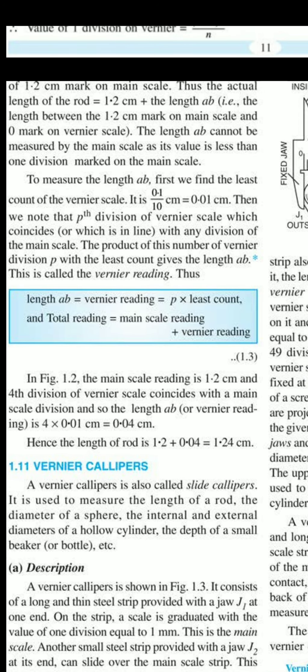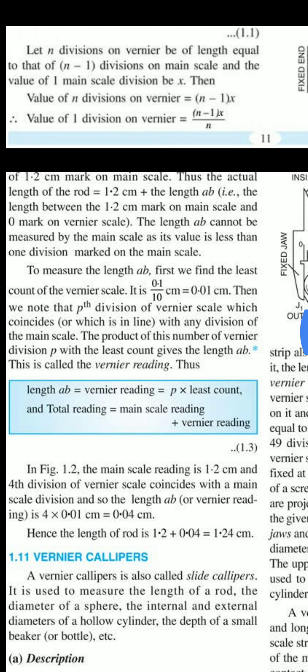Length AB can be calculated by p, where p is the coinciding division multiplied by least count, and total reading is main scale reading plus vernier reading. Vernier reading is the coinciding division multiplied by the least count. So children, this is something new for you.